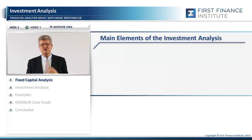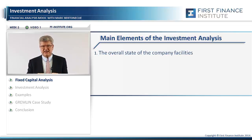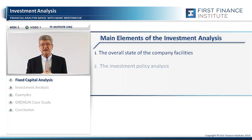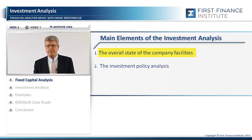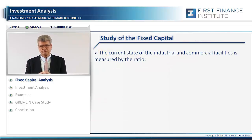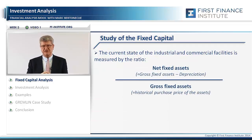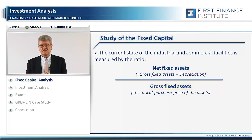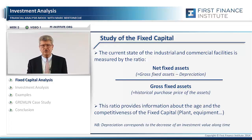Two key issues are raised at that stage. First, understanding the age, the state, and the productivity of the fixed capital. In order to do so, a very simple ratio is needed: net fixed assets divided by gross fixed assets. This ratio provides a good insight into how old or how young the fixed capital of a company is.